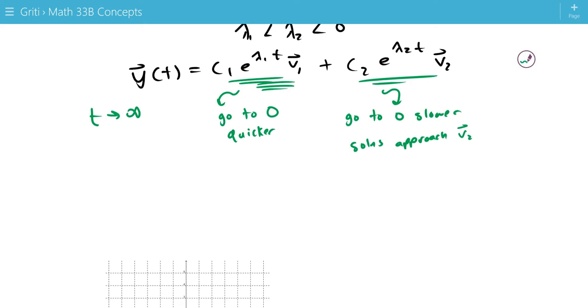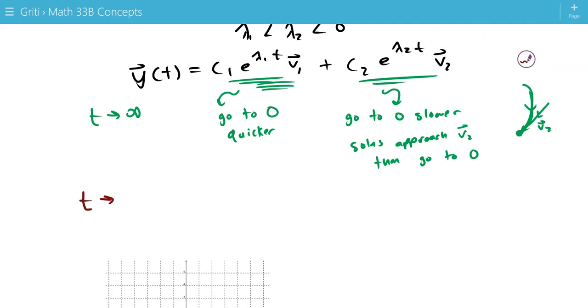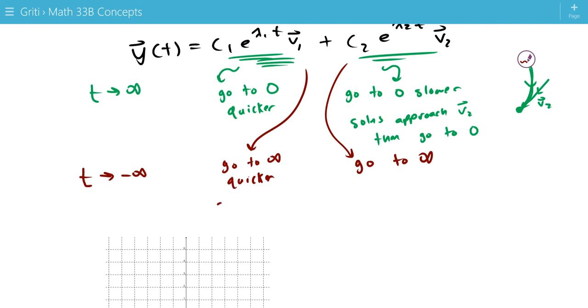Then, go to 0. That looks kind of like this. This is V2. Then the solution will, and this is 0 over here, go tangent to V2 before going to 0. And likewise, if we go back in time, as t approaches negative infinity, then these both go to infinity. But this goes to infinity quicker, because it's more strongly positive when we plug in negative values. Solutions become parallel to V1.